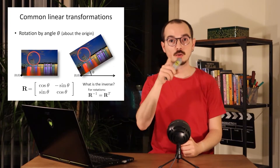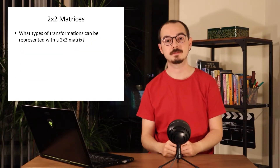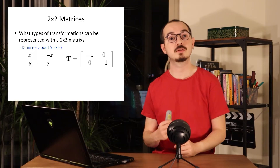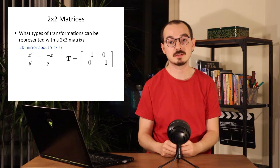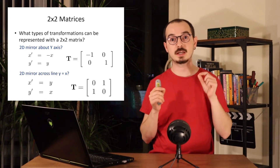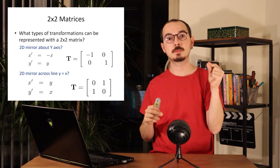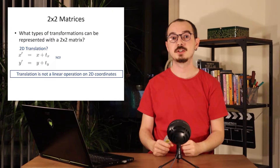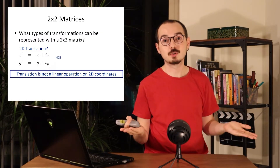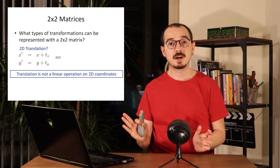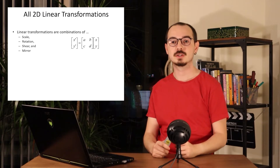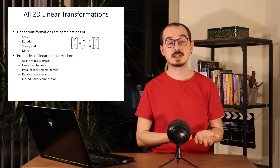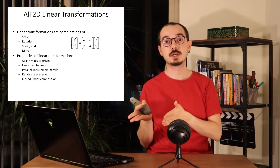What types of transformations can we represent with this simple 2x2 matrix? We can mirror the image by putting a negative coefficient in one of the diagonals, or swap x and y coordinates, which mirrors with respect to the x equals y axis. But we cannot do translation — just shifting the image by 2 pixels is not representable with a 2x2 matrix. So the 2D linear transformations include scaling, rotation, shearing, and mirroring.